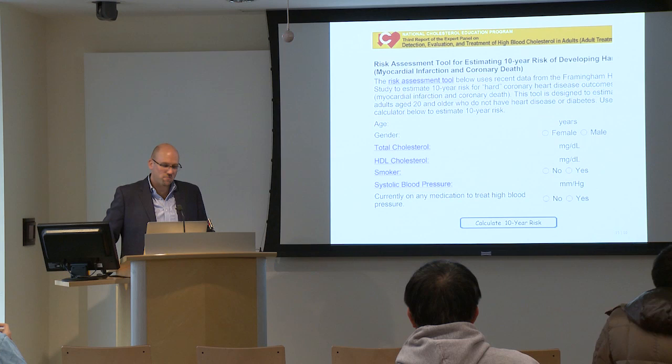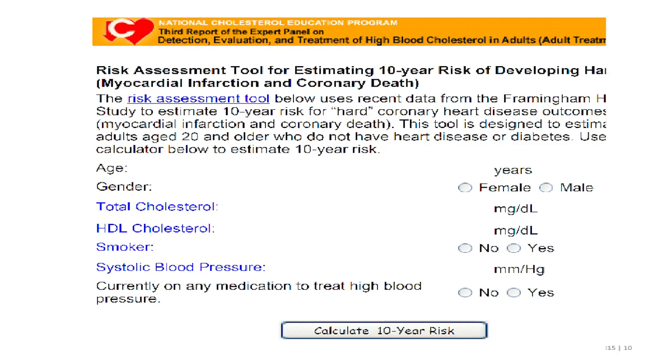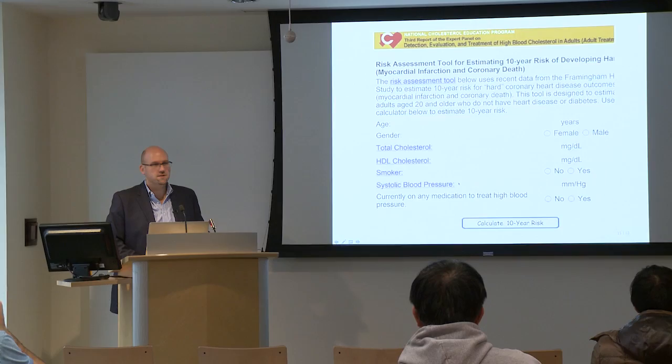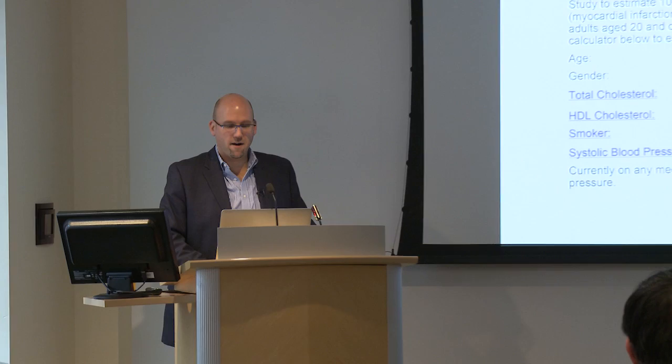This is not new. The Framingham risk score is one example of an attempt to personalize decisions about prevention of myocardial infarction with use of statins, incorporating clinical factors such as age, gender, cholesterol, and blood pressure. There's a lot of enthusiasm about the potential role of genetics to improve our ability to use clinical tools and identify individuals at risk of adverse outcomes.